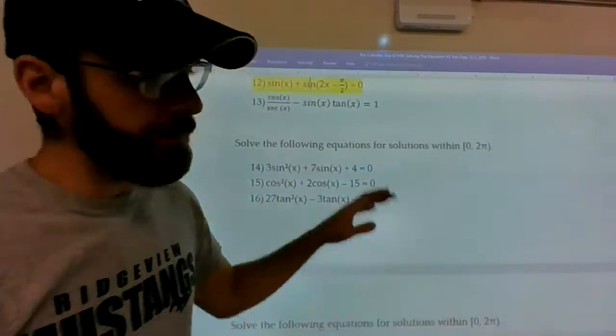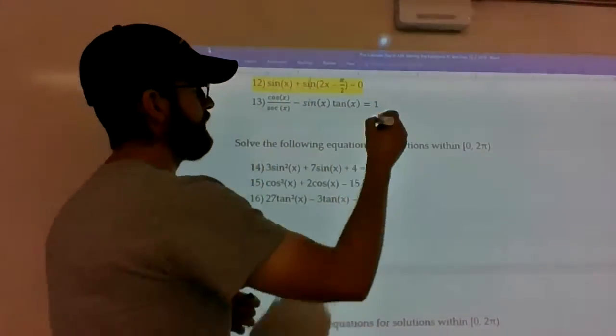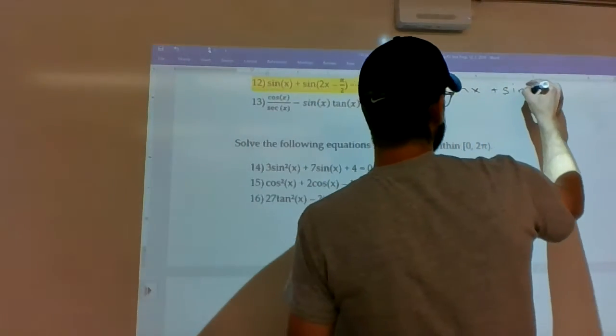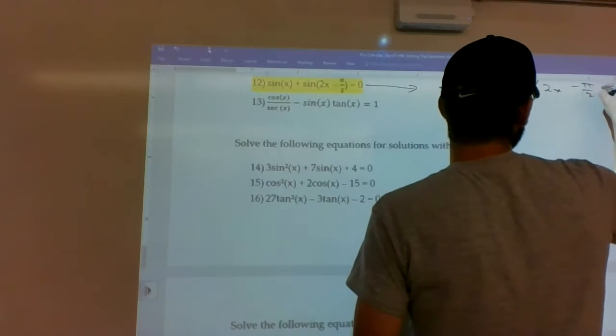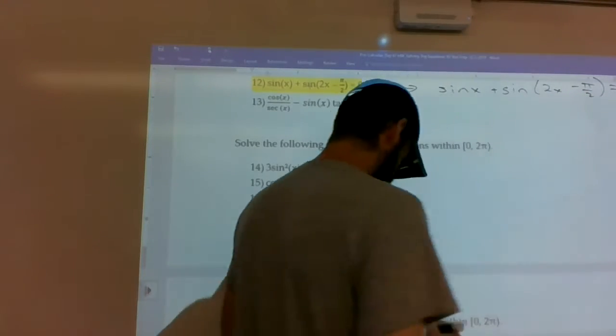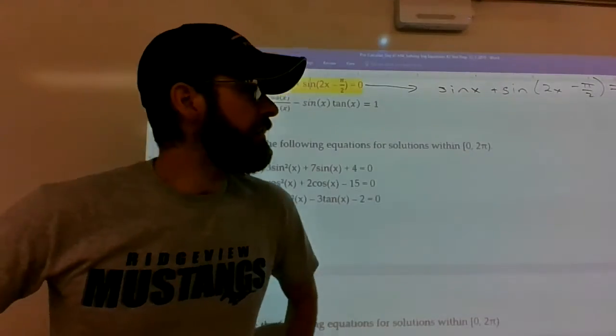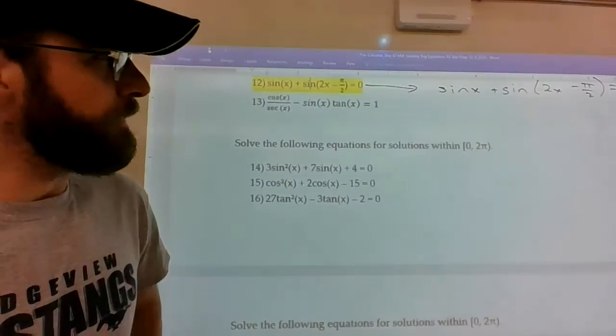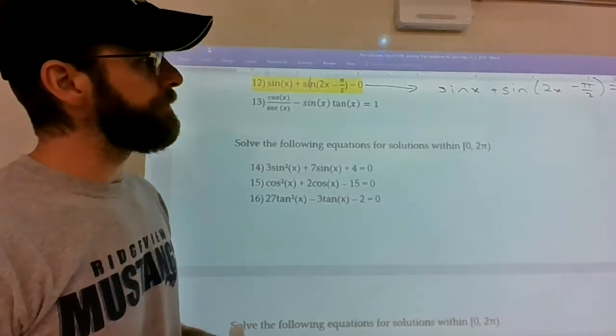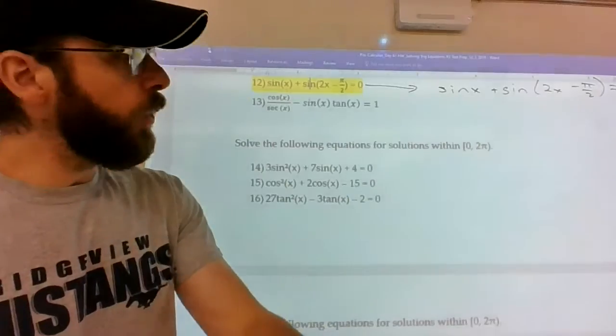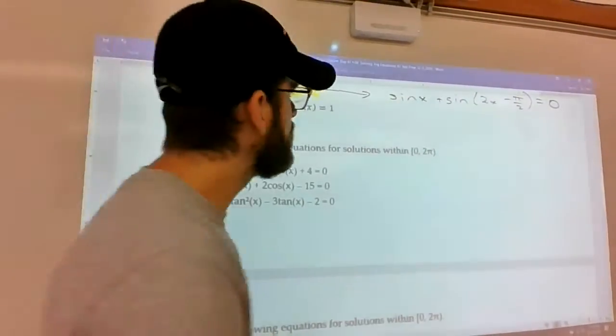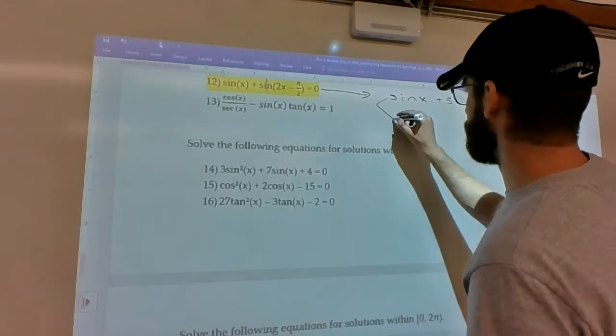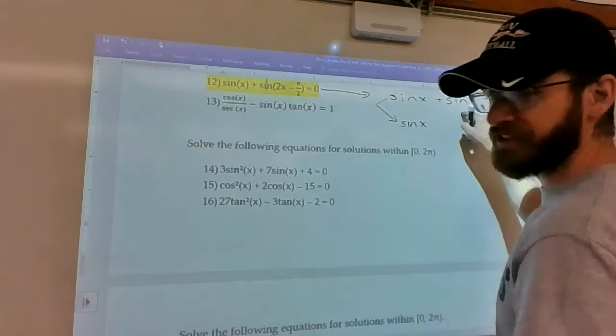Our next example would be number 12 on this assignment. We've got sine of x plus sine of 2x minus pi over 2. Now we talked extensively about using the sum and difference formulas for sine. I just wanted to see one more example where you guys worked with it right here. So it's pretty clear we've got to break out this 2x minus pi over 2 because sine of x is just not going to work well with this quantity.